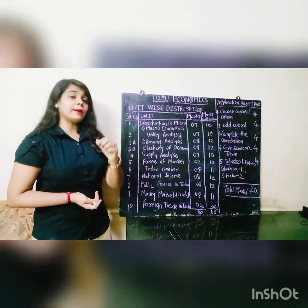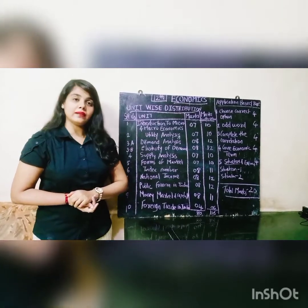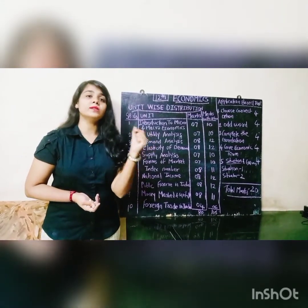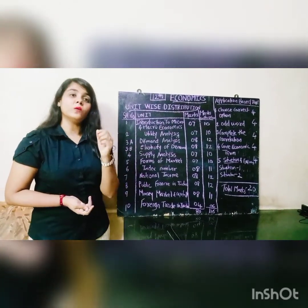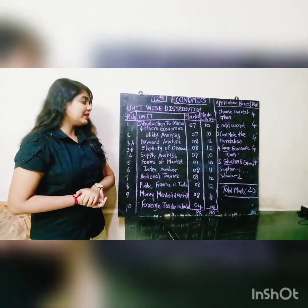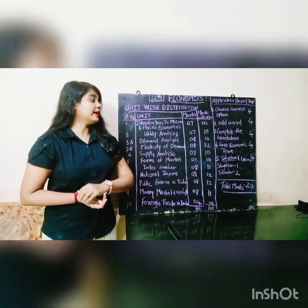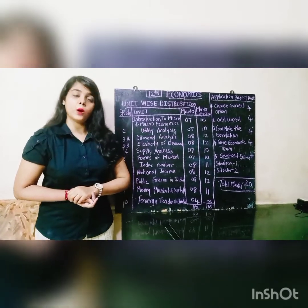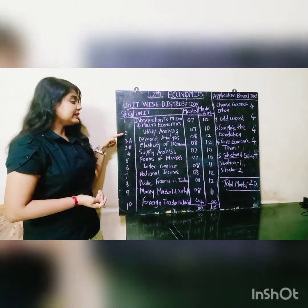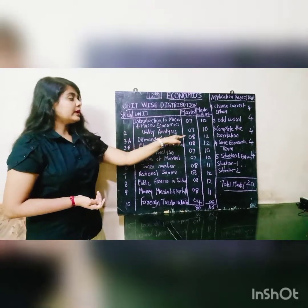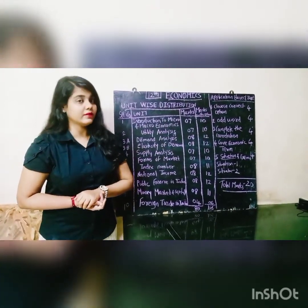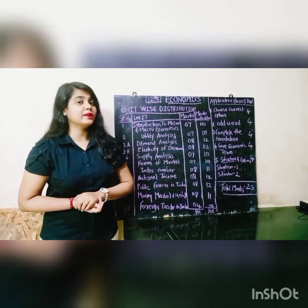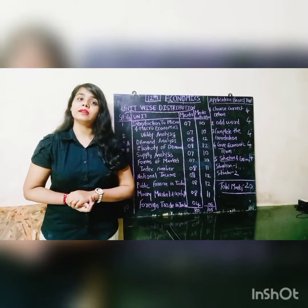Chapter number 3A — Demand Analysis — has compulsory eight marks and marks with options are twelve. Chapter 3B — Elasticity of Demand — is one of the important chapters, with compulsory eight marks and twelve marks with options. So chapters 3A and 3B together cover a total of sixteen marks out of eighteen marks allotted for chapter three.